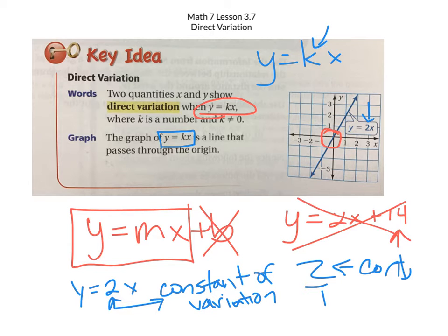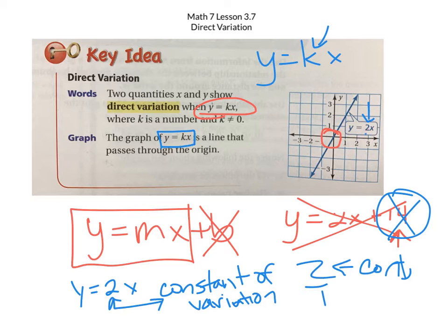What you're going to do in this lesson is recognize whether something is or is not direct variation. What are the two things you have to have? No y-intercept — it has to be zero. And then you have to have the slope in front of the x. It has to be in this format: y equals kx. Make sure you've written that in your journals.